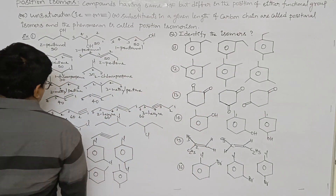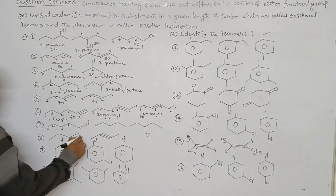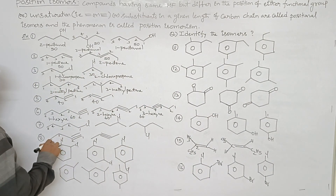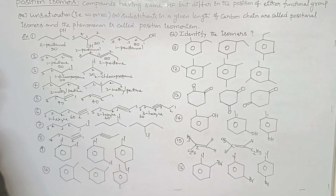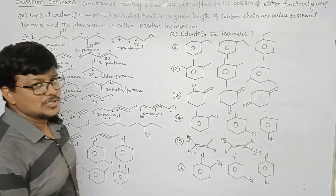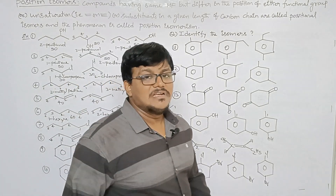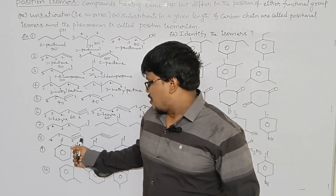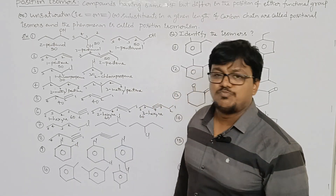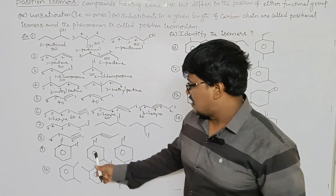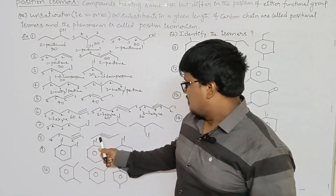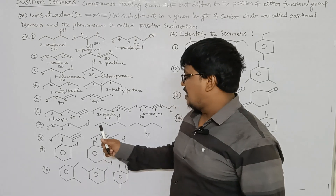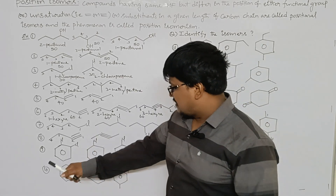The eighth example: a compound with 4 carbons having a triple bond. The first compound has the triple bond at the first position — named 1-butyne. The second is named 2-butyne. Both are positional isomers.